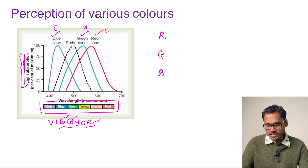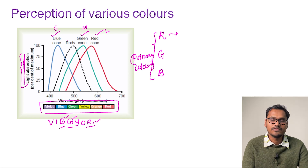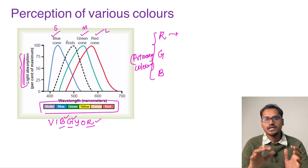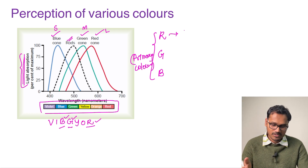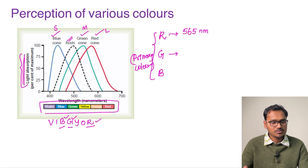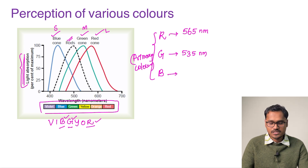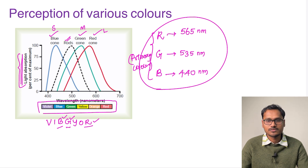Reversing VIBGYOR gives us red, green, and blue — which is why colored lights sold today are called RGB lights. These are considered the primary colors, and we have separate cones for red, green, and blue color vision. A mixture of these is perceived as different colors. The red cone responds maximally at 565 nanometers, the green cone at 535 nanometers, and the blue cone at 440 nanometers.